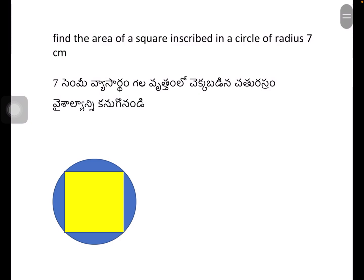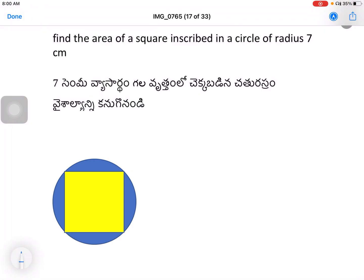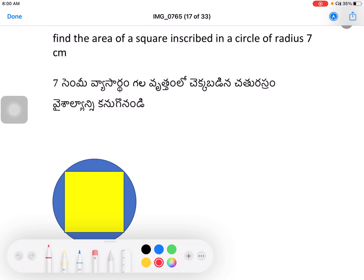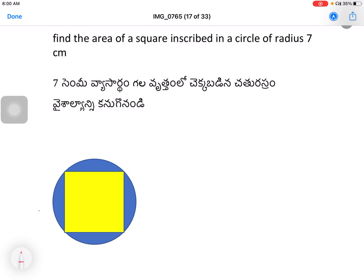In this video, we will answer the first question: Find the area of a square inscribed in a circle of radius 7 cm. We can check the square inscribed in the circle.